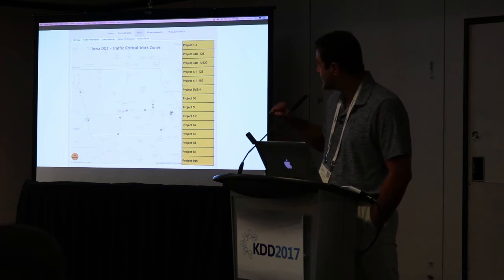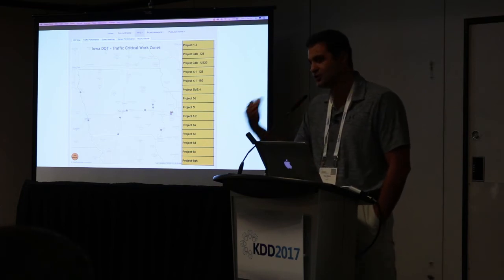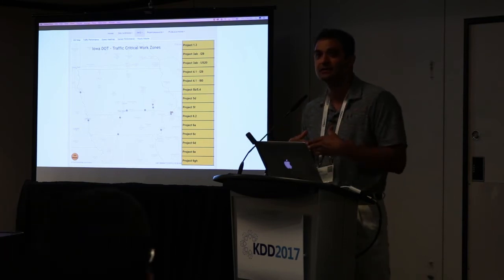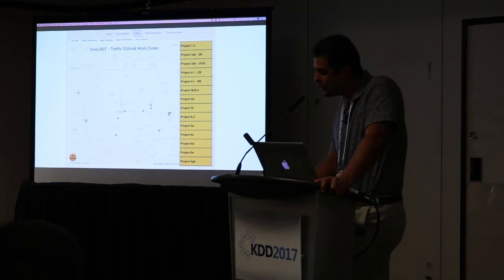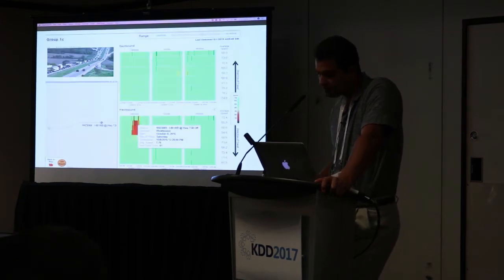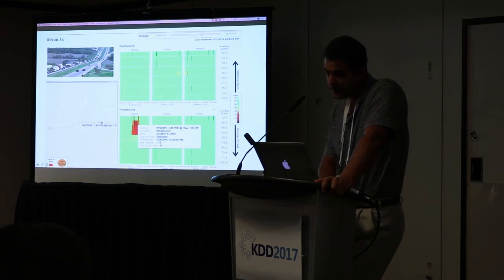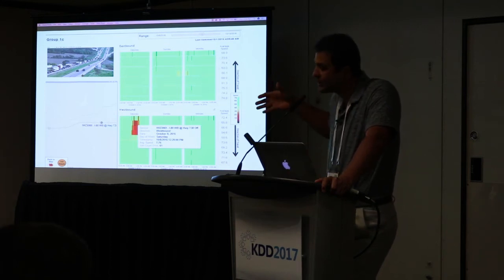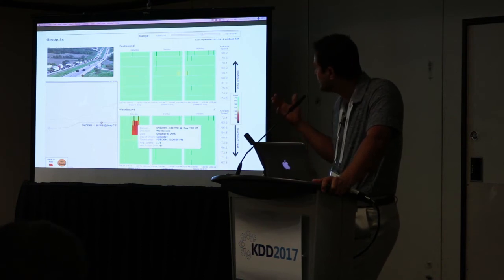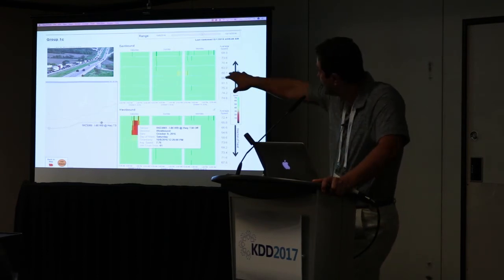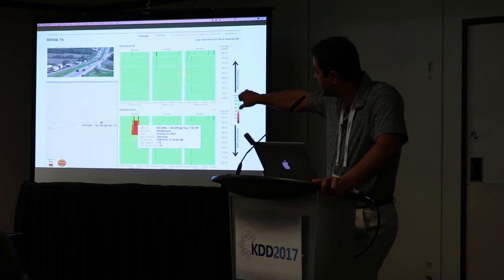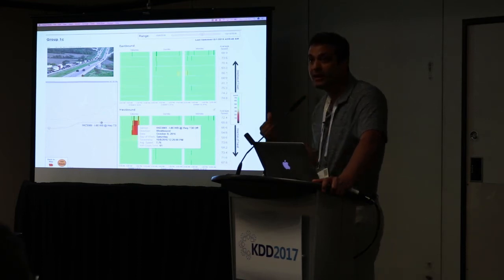Another thing we do for DOT is work zone management. We showed Iowa DOT that congestion is primarily due to two reasons: weather and work zones. So they started investing in better work zone management. We provide a tool where on one side you see all detectors in a work zone, and for every day the heat map shows green for smooth travel and red for really bad conditions. Additionally, we enable human verification via camera — hovering over a red zone, a person can see many cars and immediately know something went wrong.